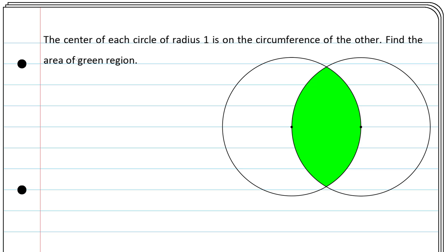Hi guys! Let's solve a well-known problem in geometry together. The center of each circle of radius 1 is on the circumference of the other. Find the area of the green region. Pause the video and see if you can figure it out on your own.